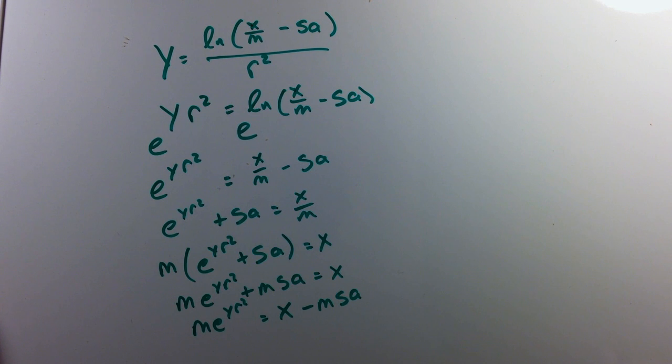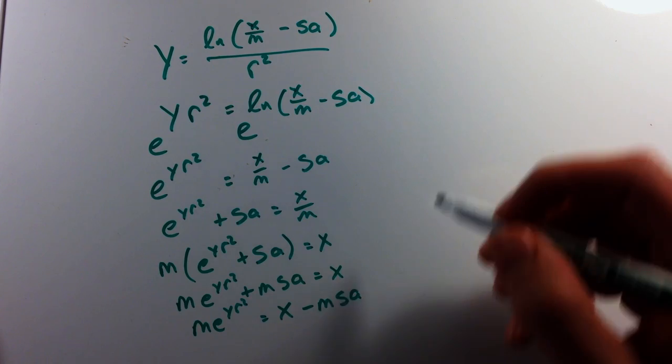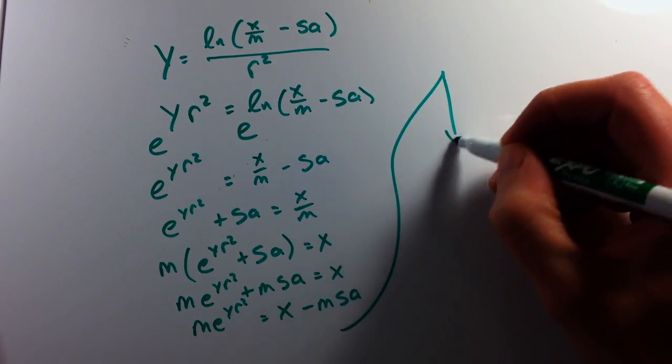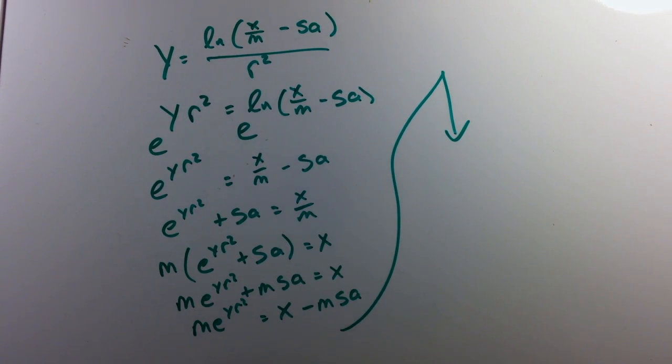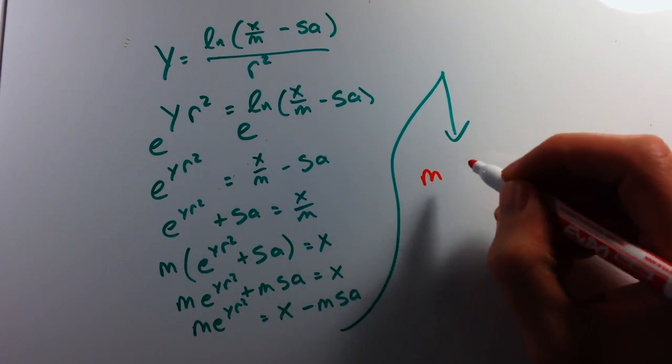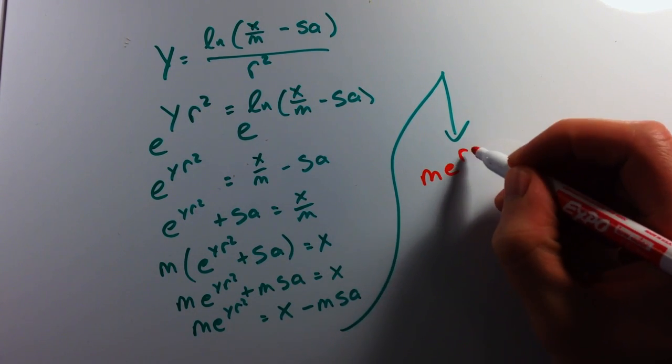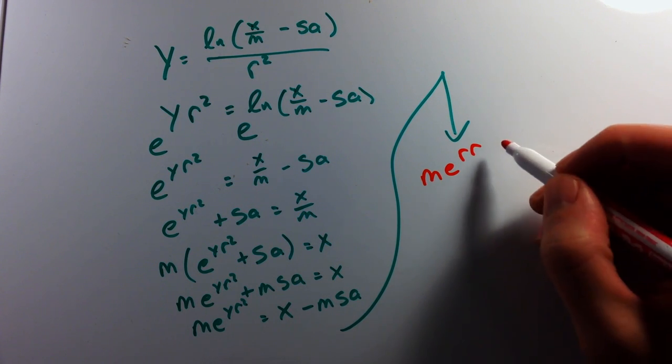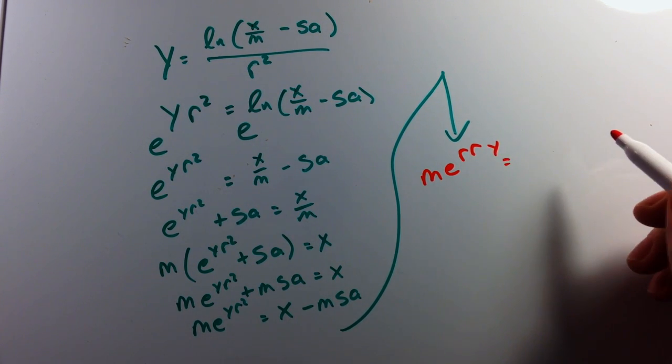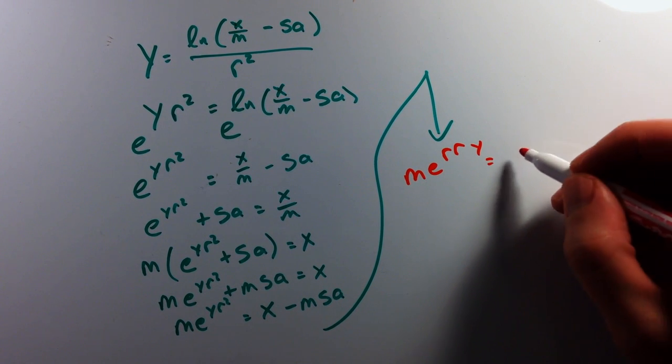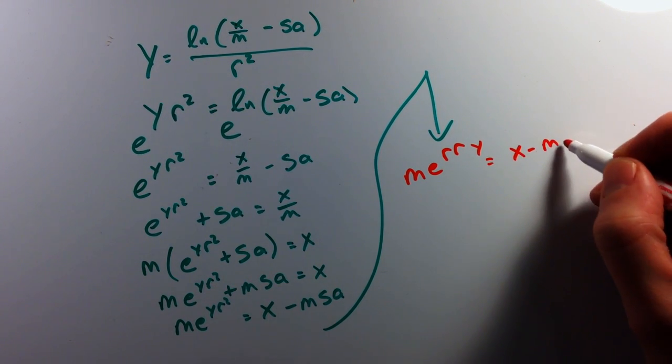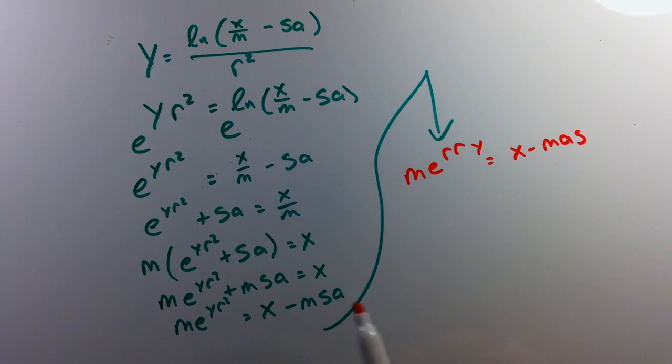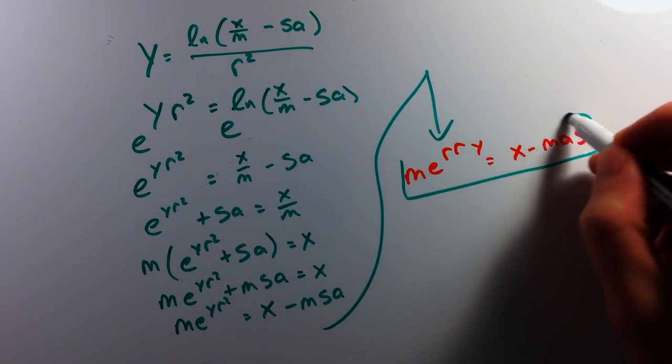If you can see what's going on here, we can rearrange the r squared and the y, and we're left with the final: m e r times r, which is r squared y, equals x minus m a s. That's how they get that equation that's going around the internet right now of Merry Christmas.